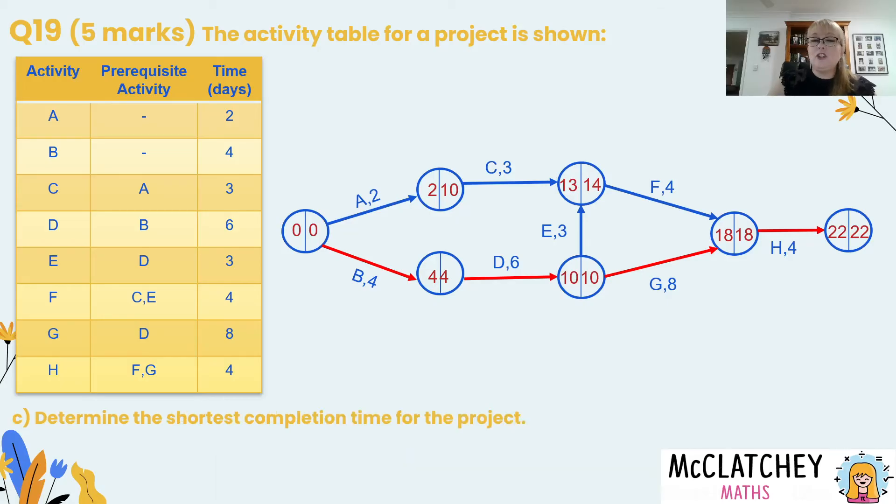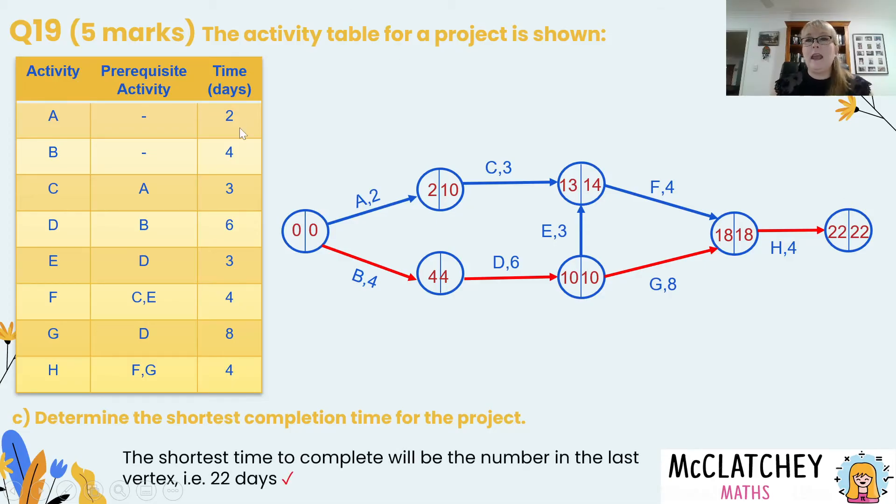All right now we need to determine the shortest completion time for the project. What is the shortest that this project can be done in? Well that's very simple. We look at our last vertex and that gives us 22. So we need to make sure we give our answer as a statement and we look at the duration. It's days. So the shortest that we can actually finish this whole project is in 22 days. That was our fifth mark.